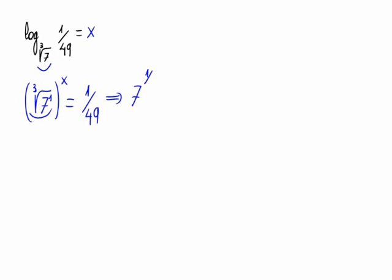That will be 7. And the cube root can be written as 1 divided by 3, so 7 is raised to the power of 1 third, and everything raised to x. This is equal to 1 divided by 49, and as 49 is 7 times 7, let's write 7 squared.